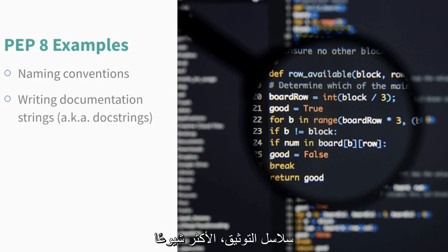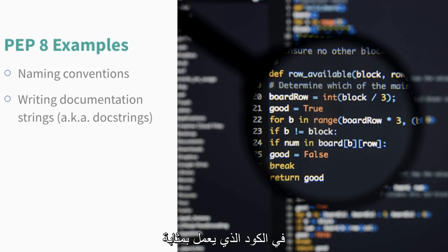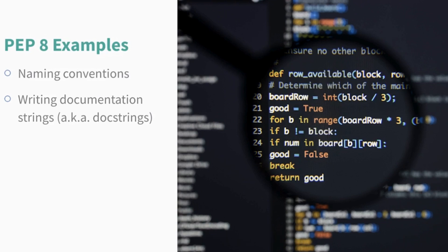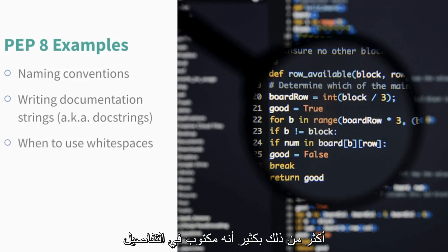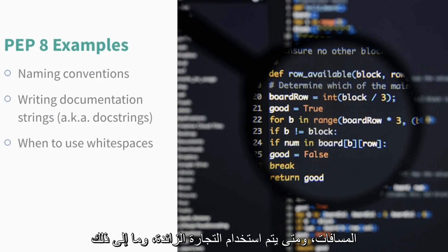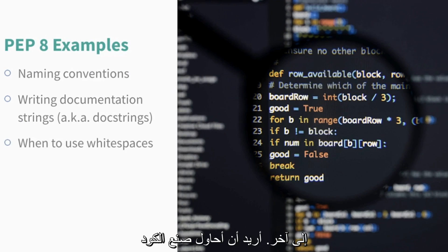PEP 8 also mentions the use of documentation strings, most commonly called docstrings. This is text put in the code that serves as documentation for a module, a class, or a function, etc. It is a good idea to keep the documentation within the code, as when we update the code, it is less likely that we forget to update the docstrings. There is so much more written in detail in PEP 8, like when to use white spaces, when to use trailing commas, etc. — all aimed at making the code look as coherent and easy to understand as possible.